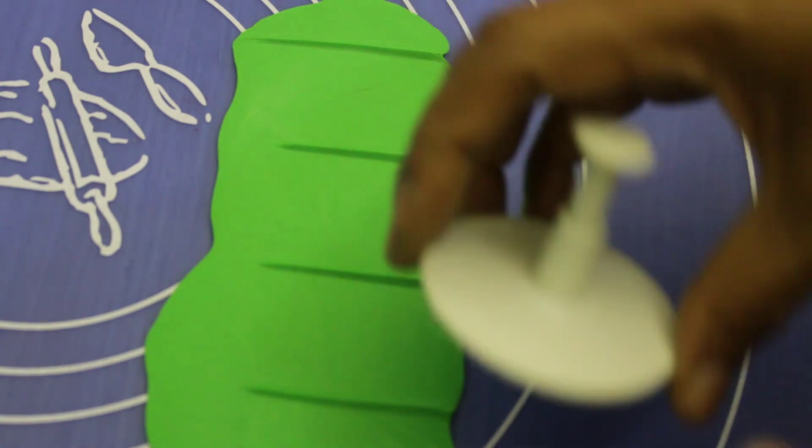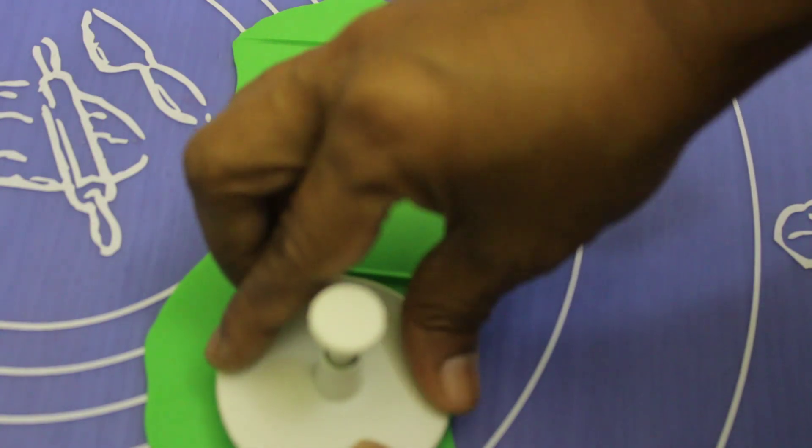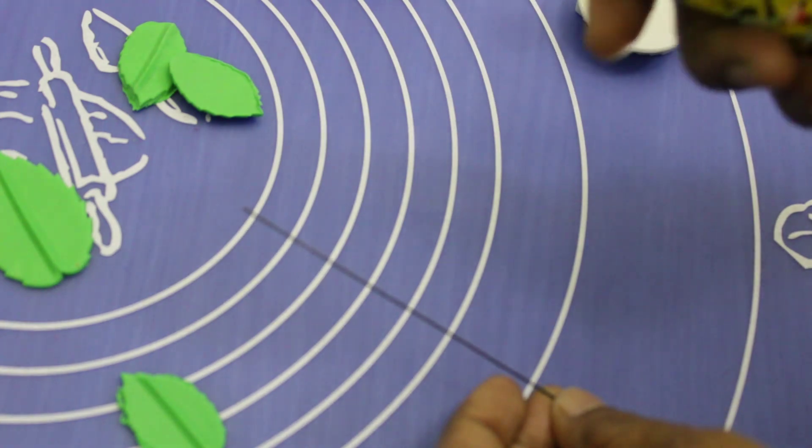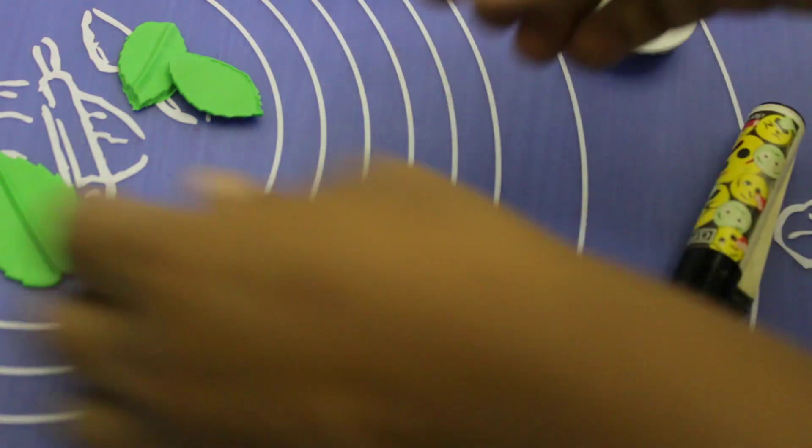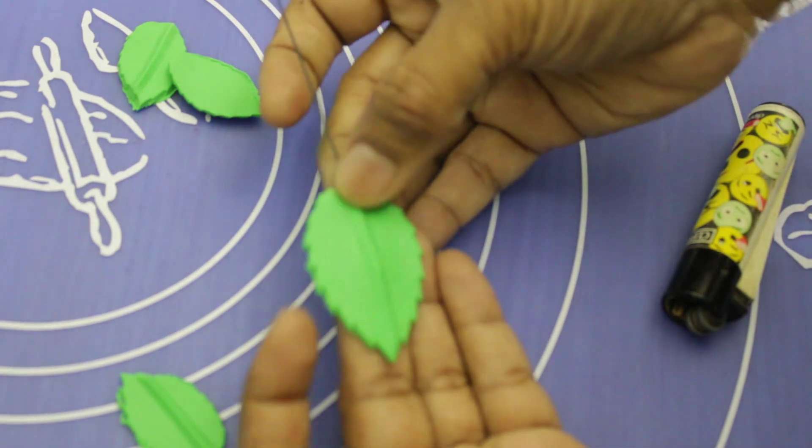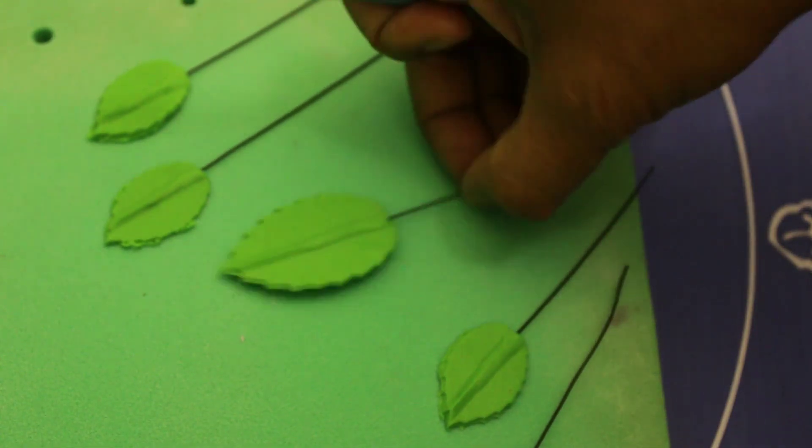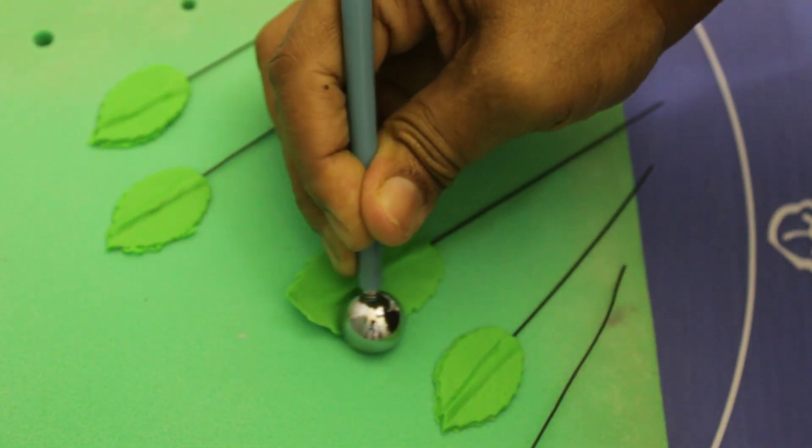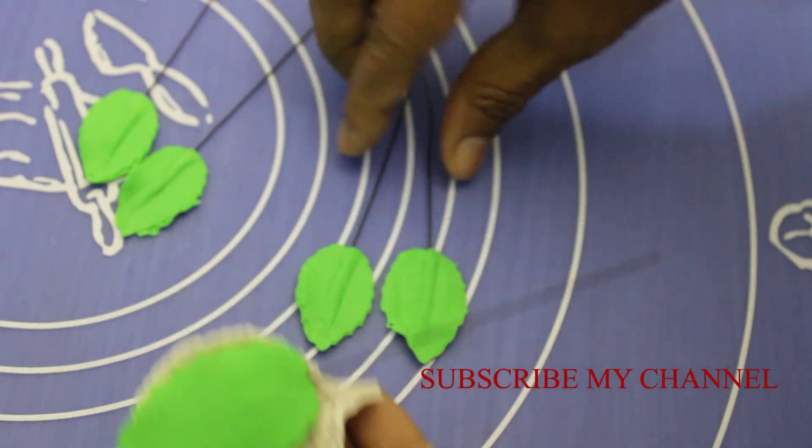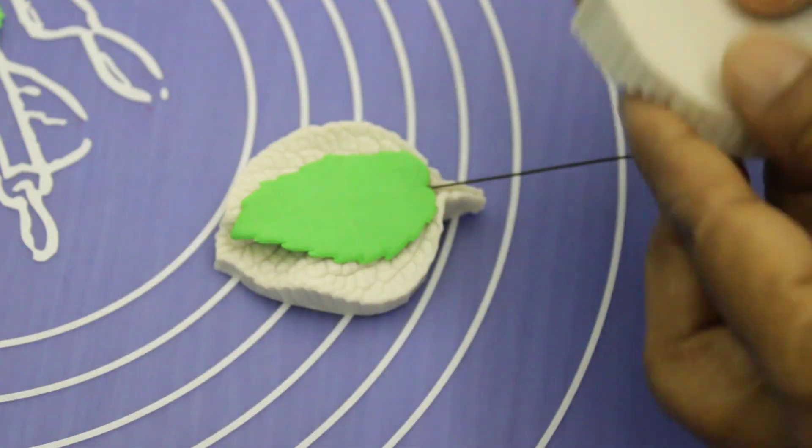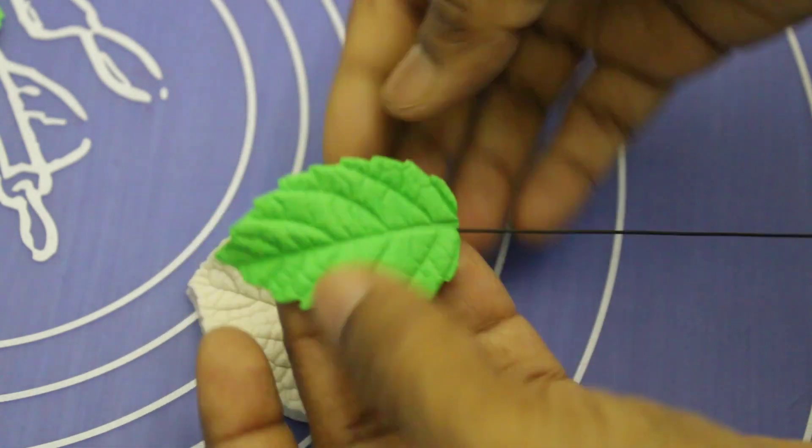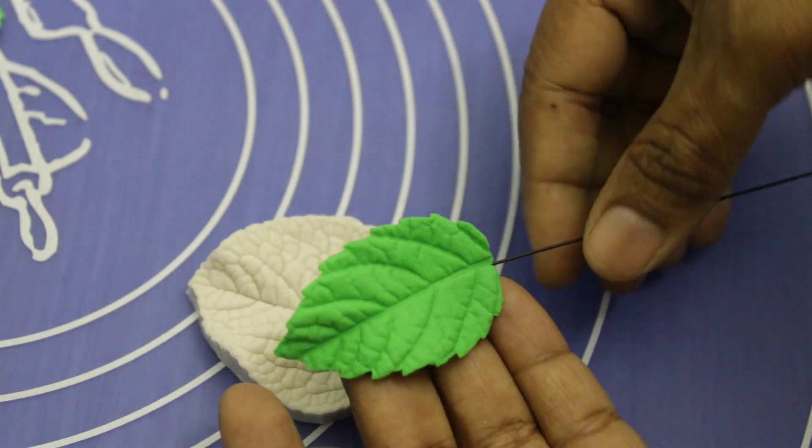So I am using this one. Today I am showing you different different leaves. Place it on foam pad. With the ball tool, make the edges smooth and thin. Place it in the middle and press it. Keep it aside.